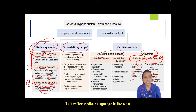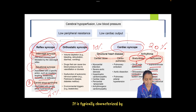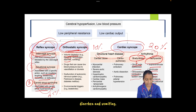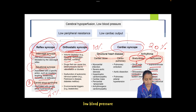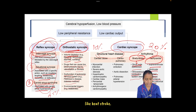Reflex mediated syncope is the most common type, accounting for 45%. Cardiac syncope accounts for 20%, and orthostatic syncope accounts for 10%. Orthostatic syncope is typically characterized by posture-induced hypotension, most often due to impaired increase in systemic vascular resistance from volume depletion — hemorrhage, dehydration, diarrhea, or vomiting — drugs causing vasodilation or diuresis, ANS dysfunction in Parkinson's or diabetes mellitus, or environmental triggers like heat stroke.